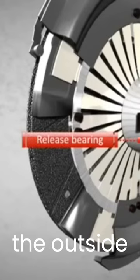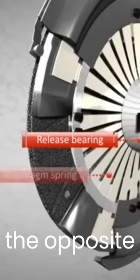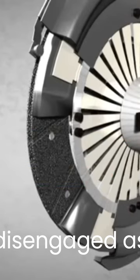The disc, while the outside of the spring is shifted to the opposite side. The clutch is disengaged as a result.